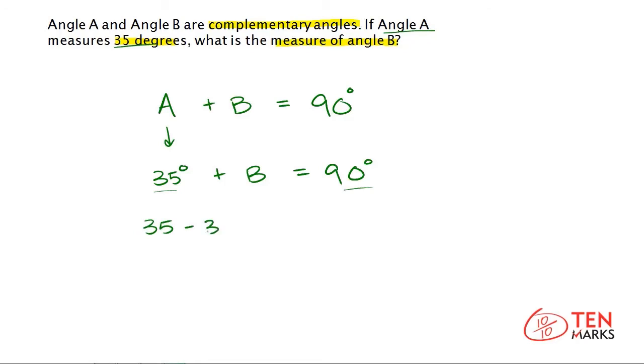So, subtract 35 from both sides, and you can include the angle symbol or the degree symbol or not. So, 90 degrees, so 35, 35 minus 35 cancels out to zero, so you're left with just B. And on this side, you have 90 minus 35, which has a difference of 55. So, the measure of angle B is 55 degrees.